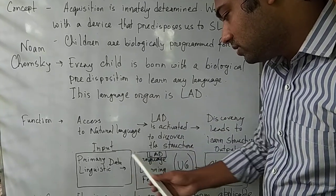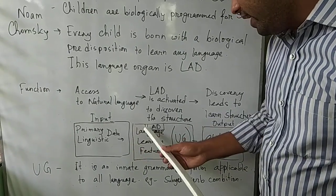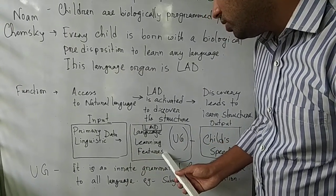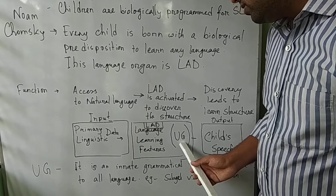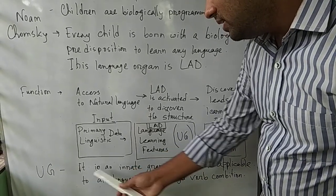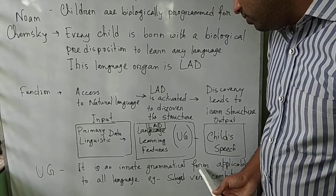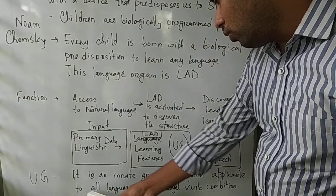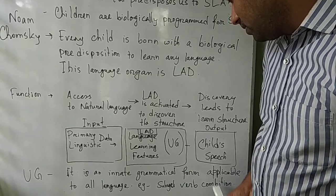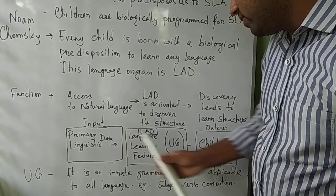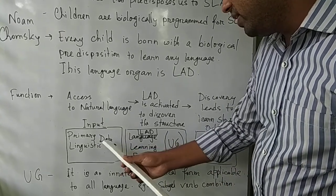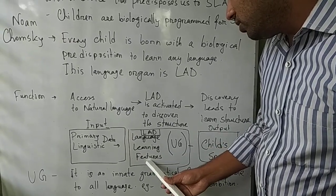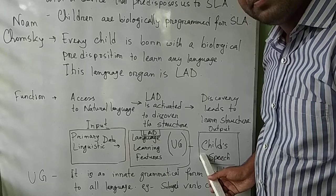The whole theory works like this: there is input into the LAD, then output. Primary data of the language enters the brain, then language learning features work with Universal Grammar — UG. Universal Grammar is an innate grammatical form, a set of principles applicable to all languages, for example subject-verb combination. Looking at the model: input goes into the LAD, works with these principles, and finally the child's speech develops.